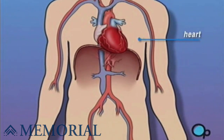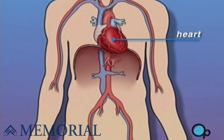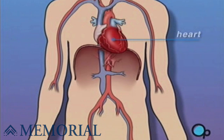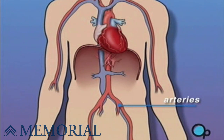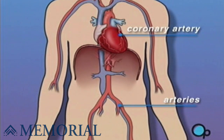The heart is located in the center of the chest. Its job is to keep blood continually circulating throughout the body. The blood vessels that supply the body with oxygen-rich blood are called arteries. The arteries that supply blood to the heart muscle itself are called coronary arteries.